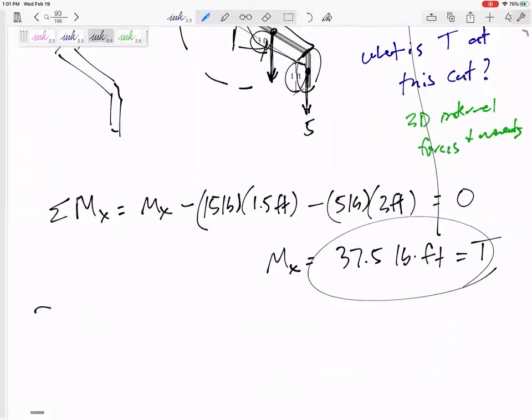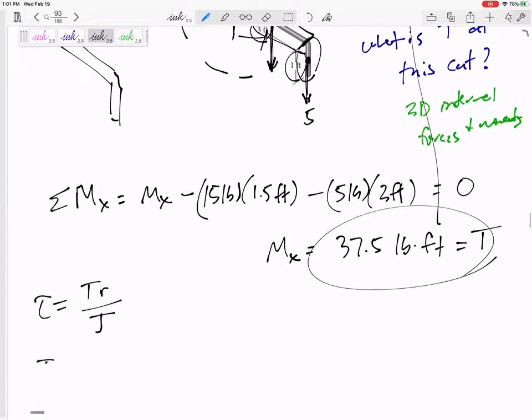So now it's real simple, right? Just Tr over J. So this tau would be 37.5 pound-feet. Now r is not always the outer radius, but r is how far away from the center of the cross section are you. But if it asks for the maximum, then yeah, that's telling you, hey, what's the stress at the outer edge of the radius? So as far away as we can get from the radius.